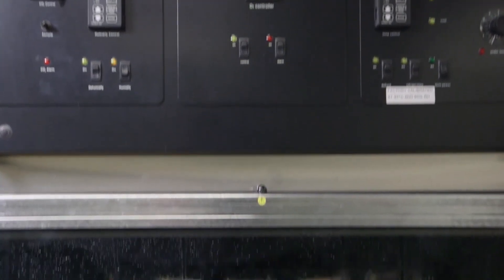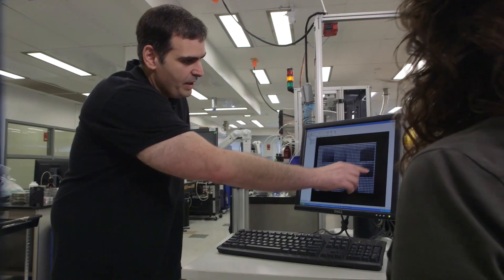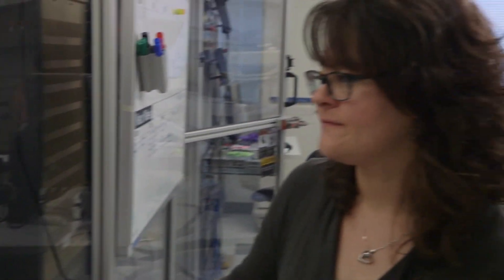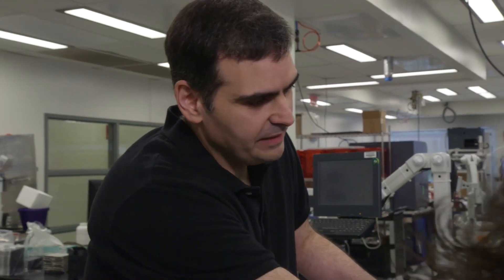The plates are incubated for a specific period to let the compounds affect the assay. Subsequently, they are transported to one of the plate readers. These are essentially highly sensitive cameras that detect whether or not those compounds altered the cell or protein in the desired way.